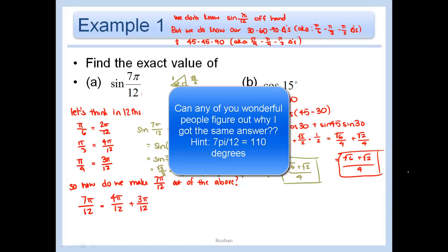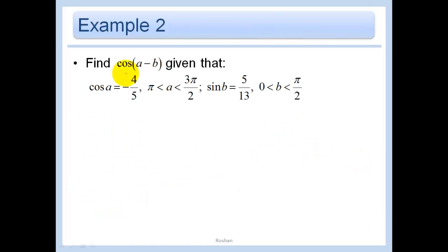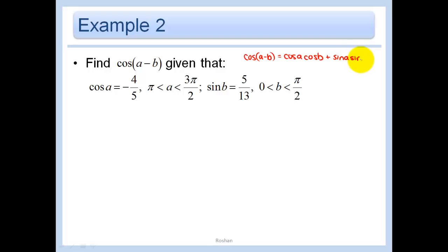The main idea is to use the angle facts you know, add or subtract them, and apply the sum or difference formulas. In the next problem, I want to find cosine(A − B) given that I know cosine A and sine B, so I need more information to find the missing trig values.